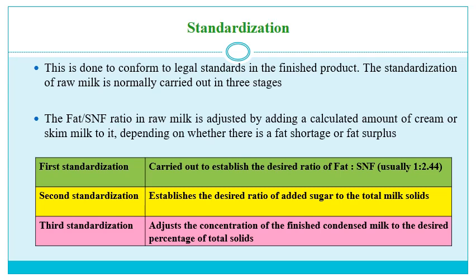The next step is standardization, done to conform to legal standards in the finished product. It is normally carried out in three stages. The fat and SNF ratio in raw milk is adjusted by adding a calculated amount of cream or skim milk. The first stage establishes the desired ratio of fat to SNF, usually 1:2.44. The second stage establishes the desired ratio of added sugar to total milk solids. The third stage adjusts the concentration of the finished condensed milk to the desired percentage of total solids.